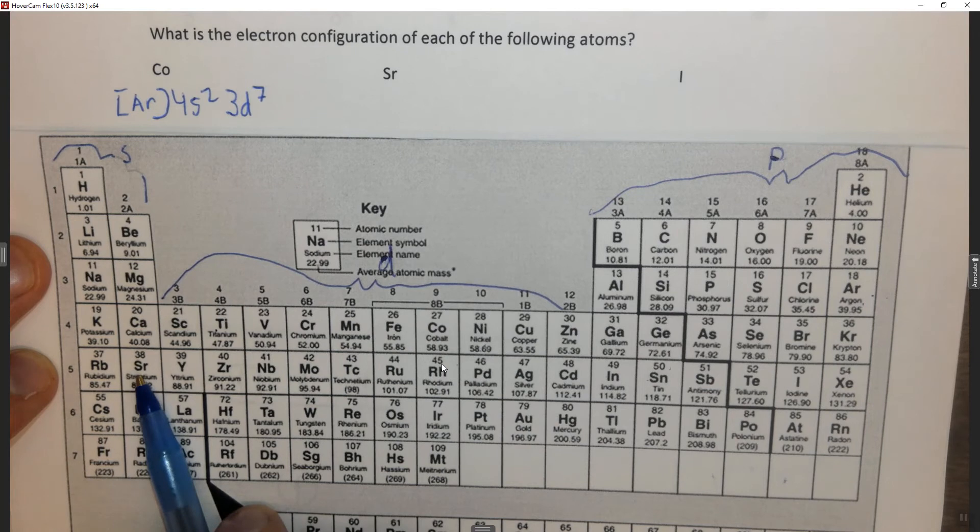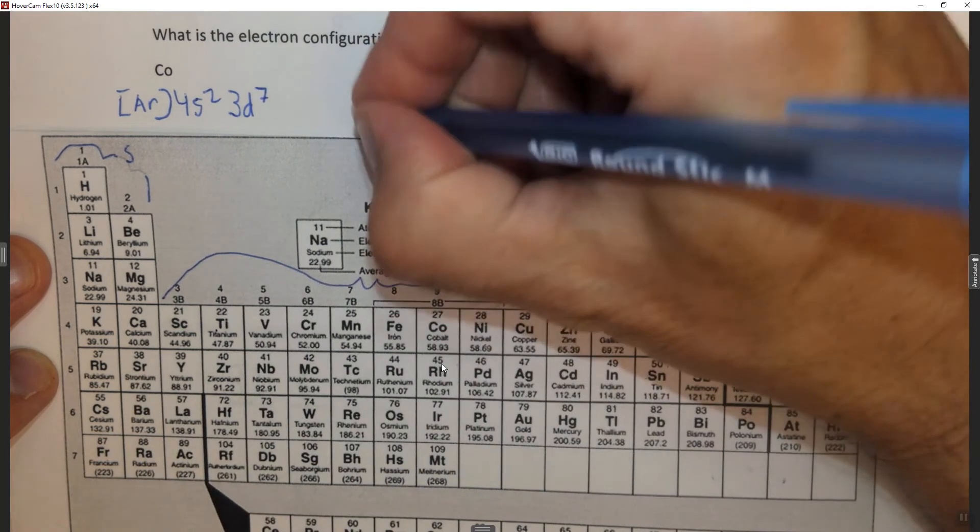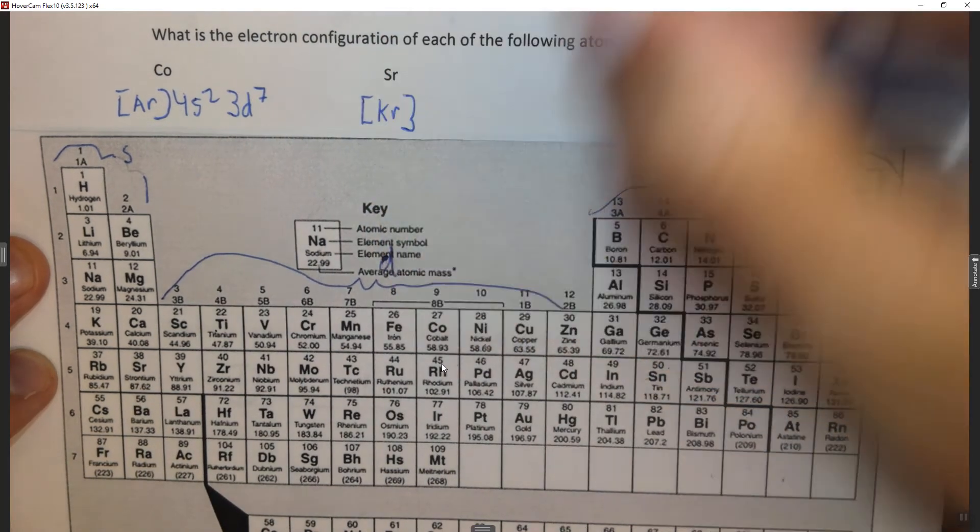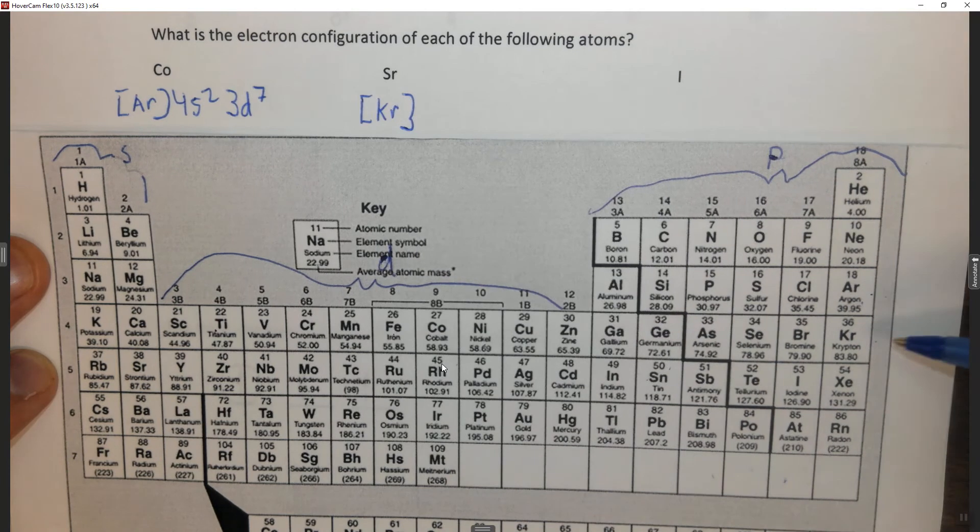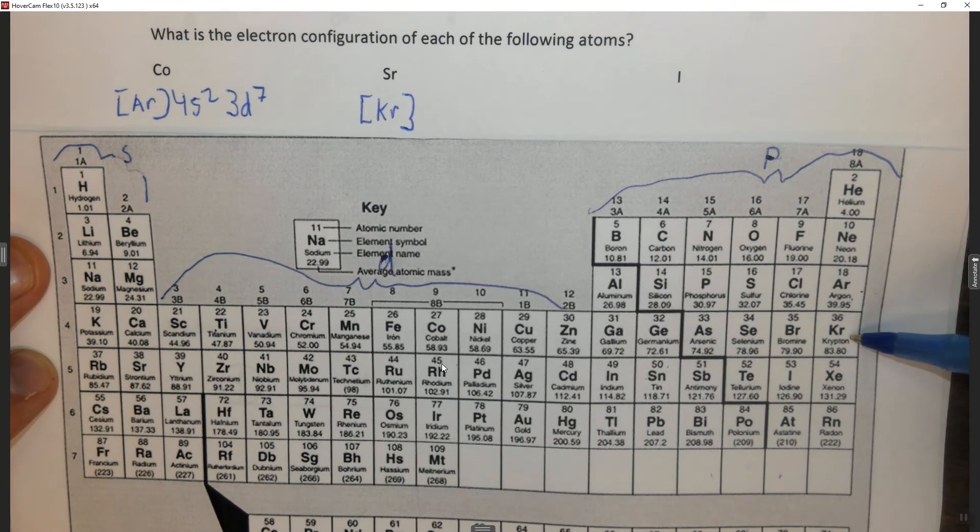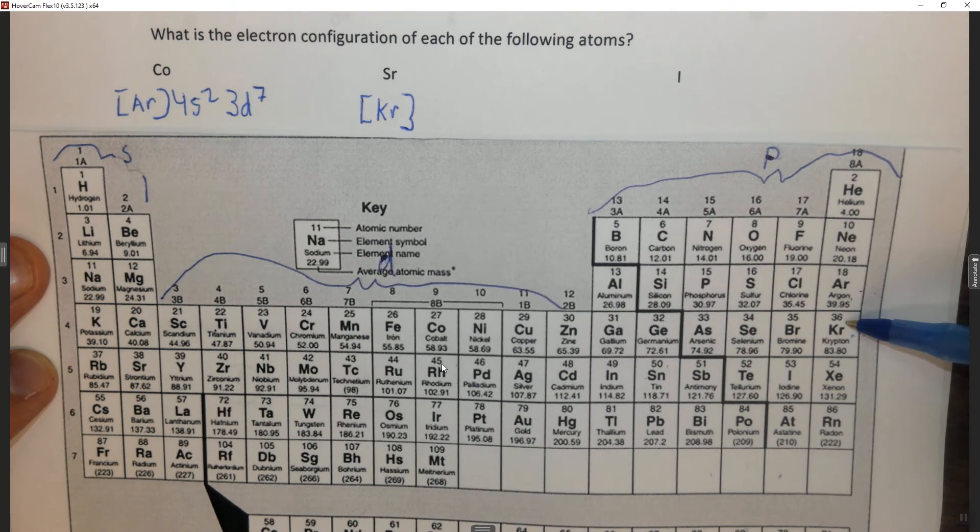Alright, strontium. We've got to find it, it's down here. So we write in the brackets krypton. Again you go to one row above, or one period above, and you write the noble gas, krypton, that accounts for 36 of the electrons.